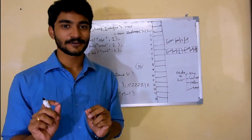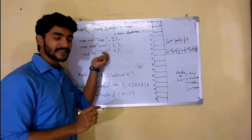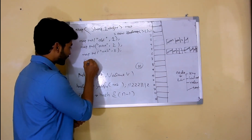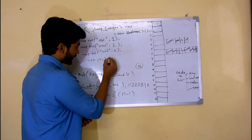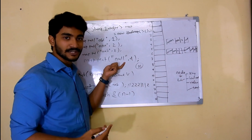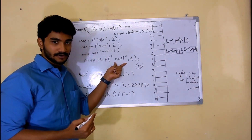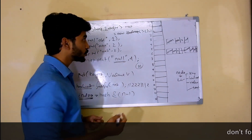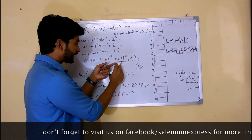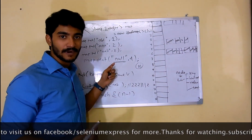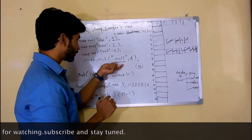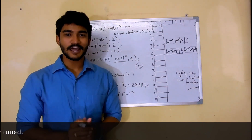One more important thing I forgot to mention — very important from an interview perspective: what happens when you add a key with a null value? In a Map, you can enter null as a key. If you do map.put(null, 4), which bucket does it go into? Whenever the key is null, it always goes into the zeroth bucket. There are lines of code inside the put method that handle this. Just remember: null key always goes to the zeroth bucket.